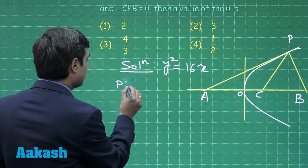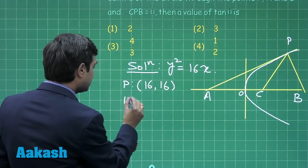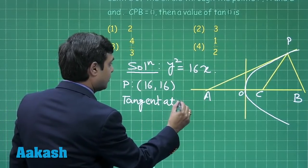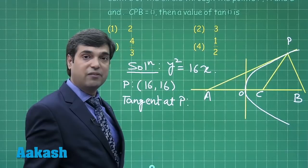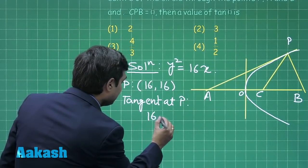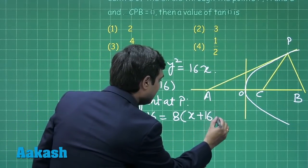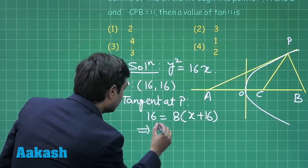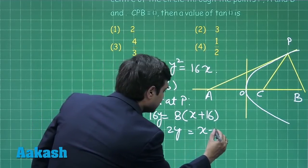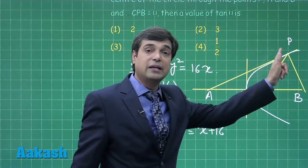Point P is (16,16). Equation of tangent at point P, this is simply given by T = 0 which gives me 16y = 8(x + 16) or simply 2y = x + 16. This is the equation of tangent, that is equation of the line PA.